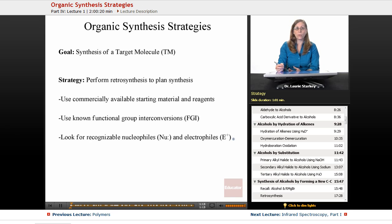And in order to do that, when we do our retrosynthesis and our disconnections, what we're going to be looking for are recognizable nucleophiles and electrophiles. Nucleophiles, the electron donors. Electrophiles, the electron acceptors. And we're going to be looking for ones that we've seen before that are familiar to us.